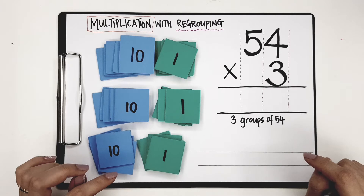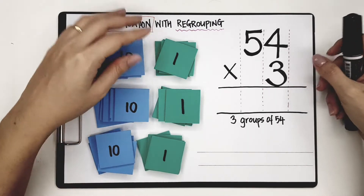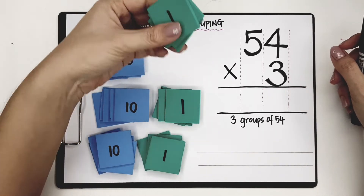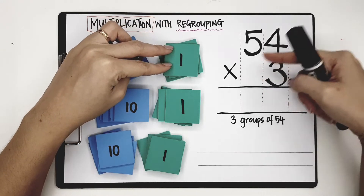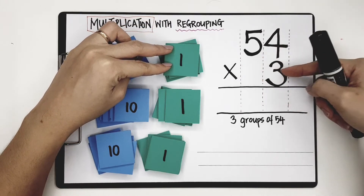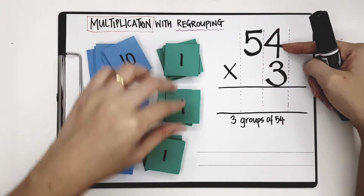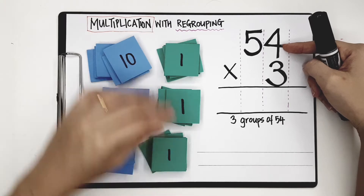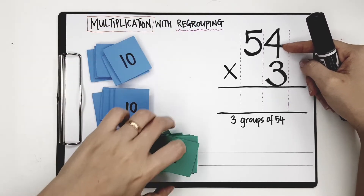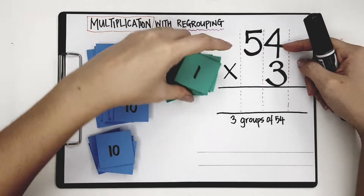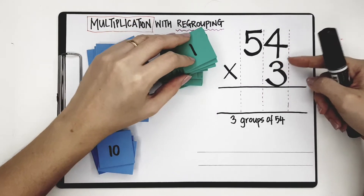So we're going to begin by multiplying the 1's. Now 54 has 4 ones. If I have 3 groups of 4 ones, I would have 12 ones. As you can see here, 4 ones plus 4 ones plus 4 ones gives me 12 ones.